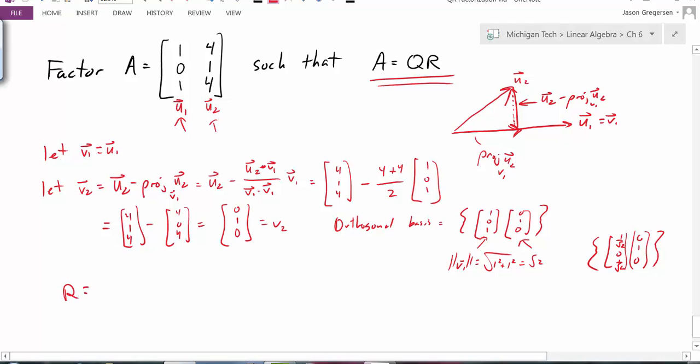Now to find R, I just need to take Q transpose times my matrix A. Well, if I'm using these as the columns of Q, then they will be the rows of Q transpose.